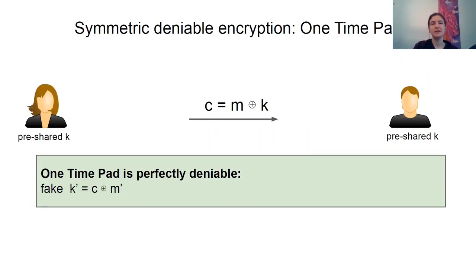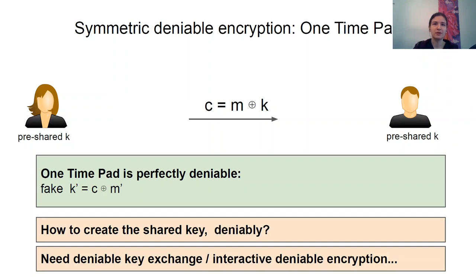It is instructive to look at the case where parties have a pre-shared secret key. When this is available, deniable encryption can be very easy: just send a one-time pad of the message and it's easy to set up a fake key to match any desired target fake plaintext M'. However, the question is how to come up with such a key in a deniable manner. For example, if Diffie-Hellman key exchange is used, then the key is committed to by the transcript, and thus we are back to the same problem.